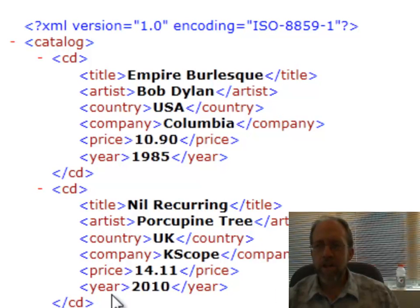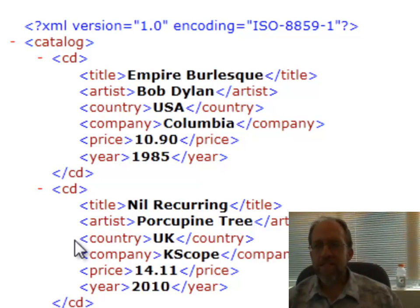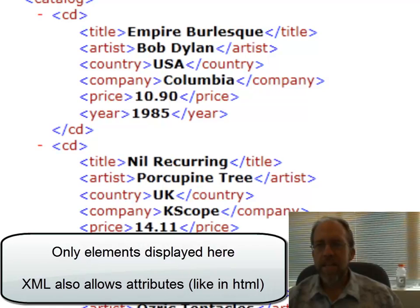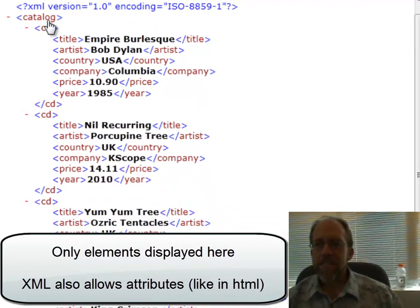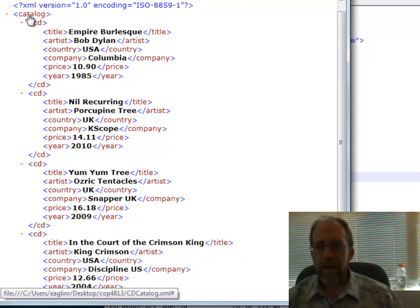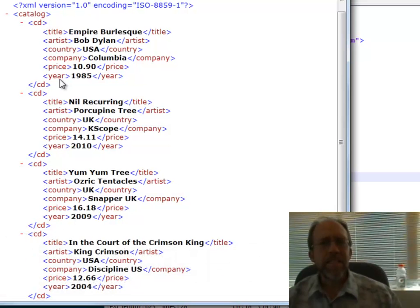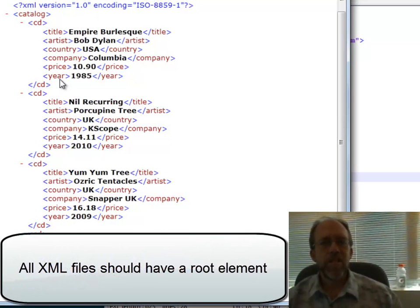Within the open CD tag and the closed CD tag, I have the same elements each time: title, artist, country, company, price, and year. These are child tags for each individual CD. I've got four CDs in my catalog. This is called the root catalog — it's the root element — and each CD tag is a child of that root element, which in turn has its own children.